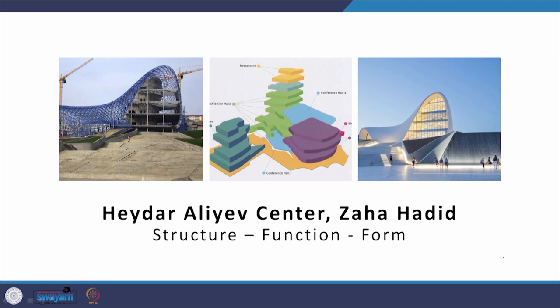Let us take a very famous building of our modern times — the Haydar Aliyev Centre in Azerbaijan by Zaha Hadid. Here is the structure, the functional organization of the centre, and how it appears from the outside — the form. When these three components come together in perfect harmony, when a building has an attractive form, a well-defined functional organization, and a stable structural system, it generally always turns out to be a beautiful building.